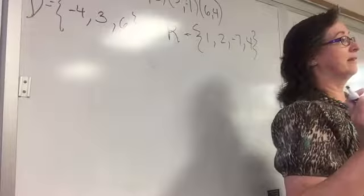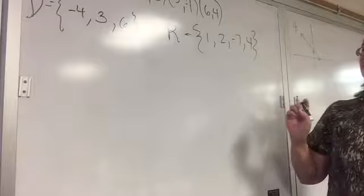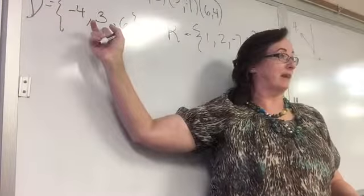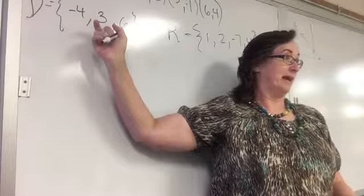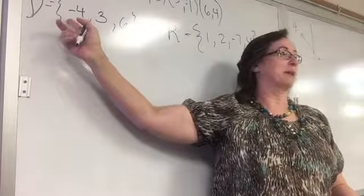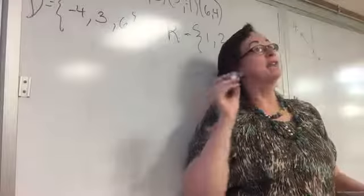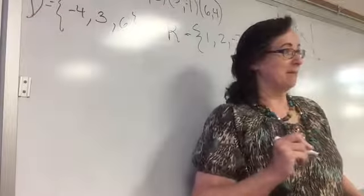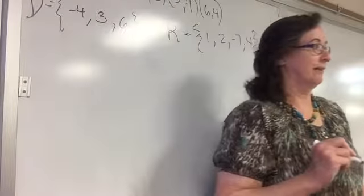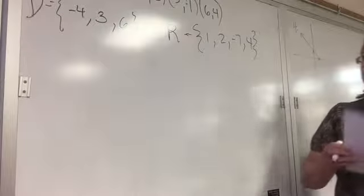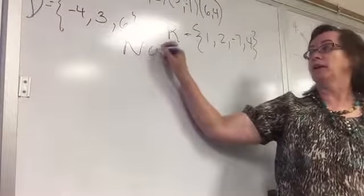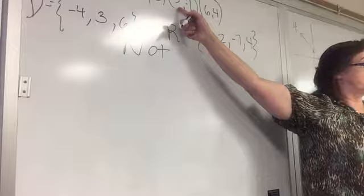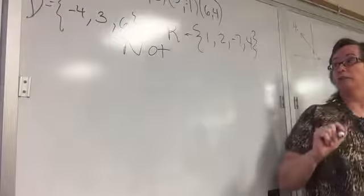A student asks why the first 3 wasn't included in the domain. The first 3 was included — I just put them in order: negative 4 comes before 3 comes before 6. So you don't repeat a number in domain or range. This one is not a function because of the 3 and the 3 going to two different outputs.